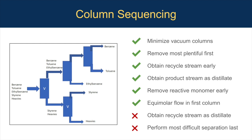Column sequencing is developed by following eight different heuristics, which are important for making the process more efficient by minimizing costs and creating more pure product streams. The best column sequence violates only two of these heuristics. The first is to obtain the recycle stream as distillate; however, ethyl benzene, the recycle stream, is recovered as a bottom stream. The second heuristic violated is to perform the most difficult separation last; however, the styrene and ethyl benzene separation, which is the most difficult, is done first. For reference, the second-best column sequence violates five heuristics.